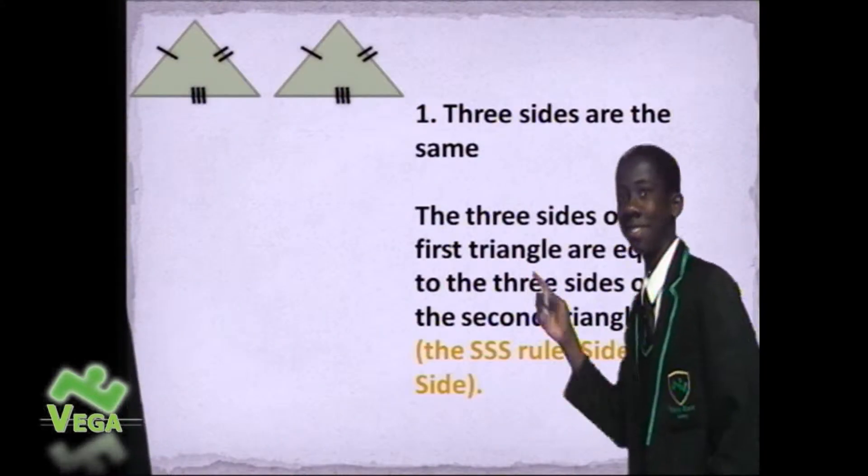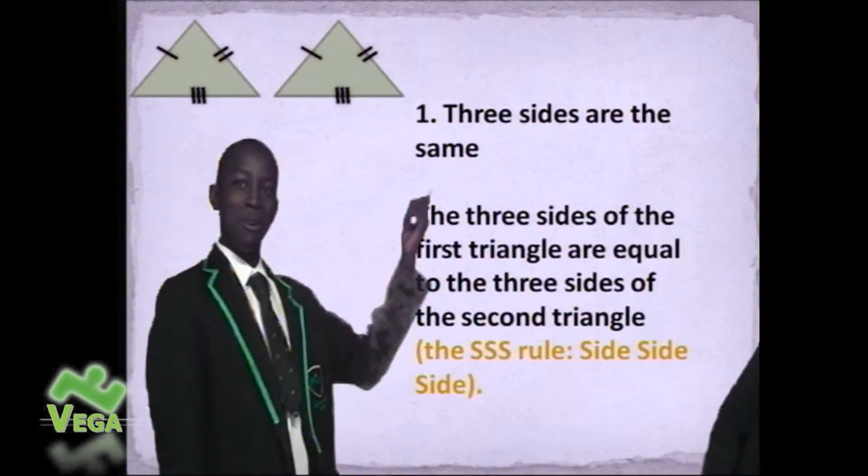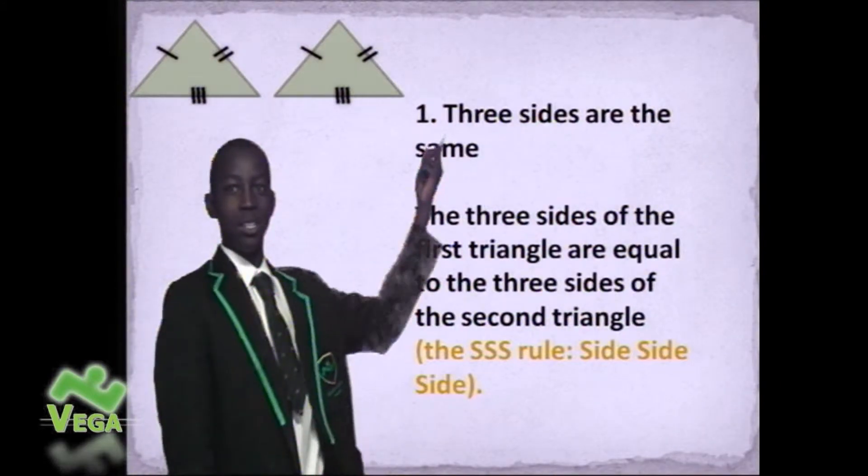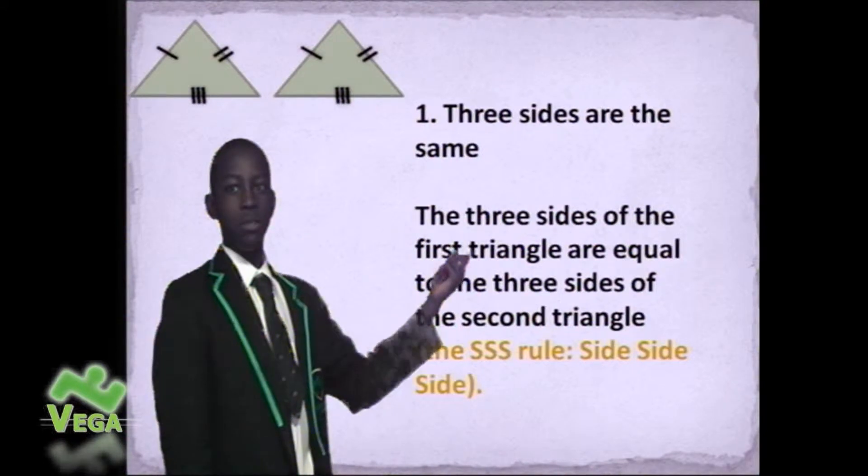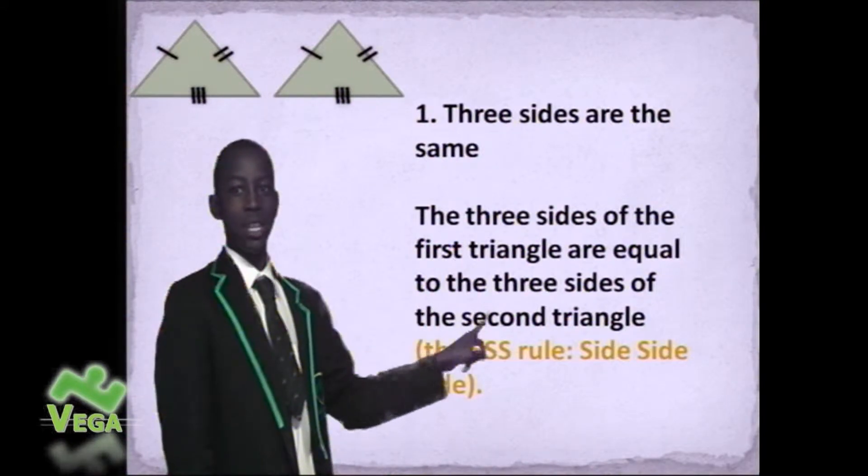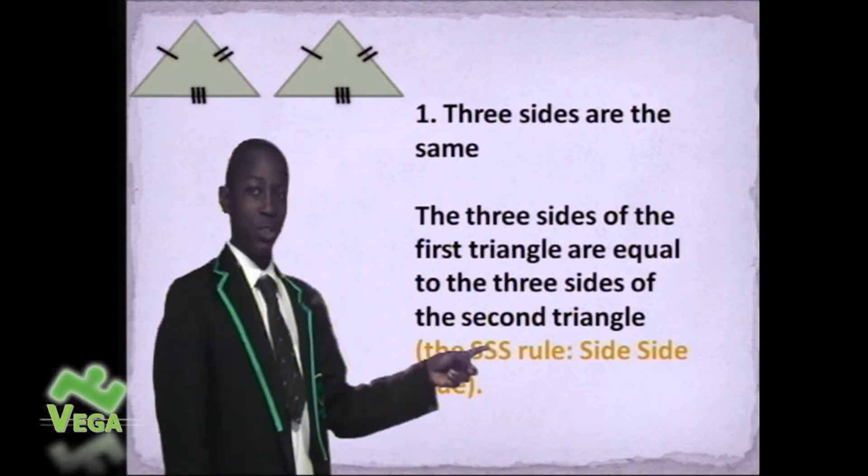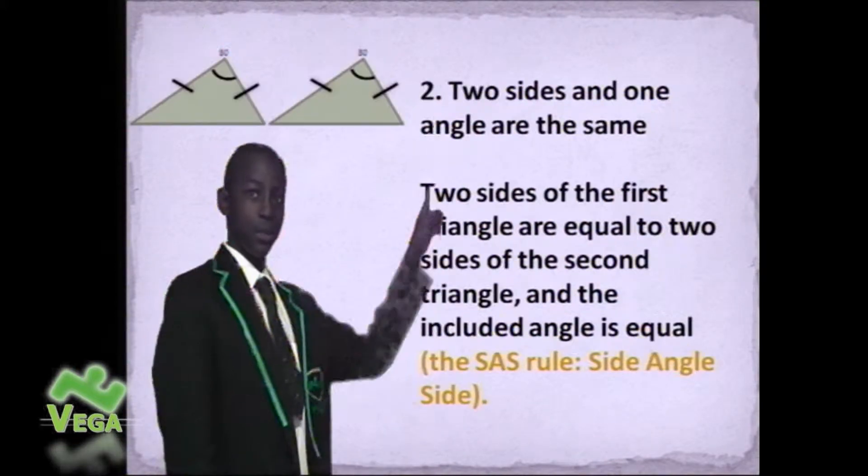Congruent. The first rule of congruent shapes is three sides are the same. The three sides of the first triangle are equal to the three sides of the second triangle, the SSS rule: side, side, side.